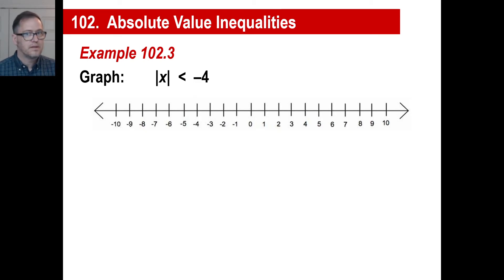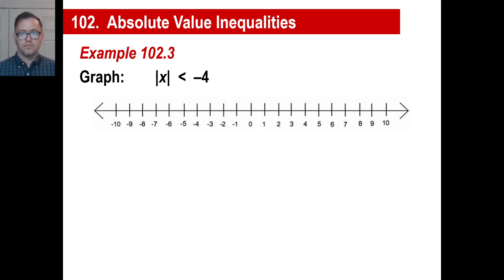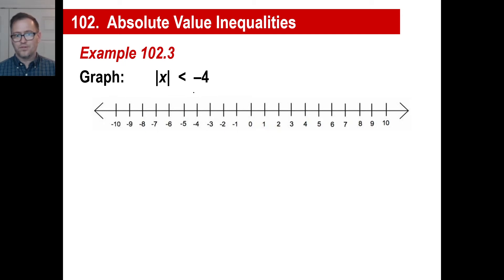How about negative two? The absolute value of negative two is two. Two is not less than negative four — that doesn't work either. How about zero? The absolute value of zero is zero. Is zero less than negative four? No, that doesn't work. It doesn't look like anything works here. And there's a reason — because nothing does work. There isn't a number in the entire universe that you can take the absolute value of and get less than negative four.